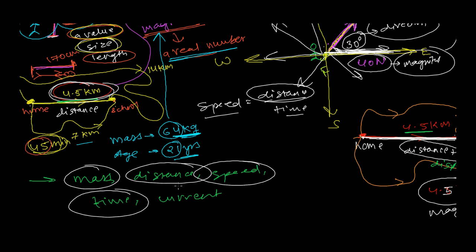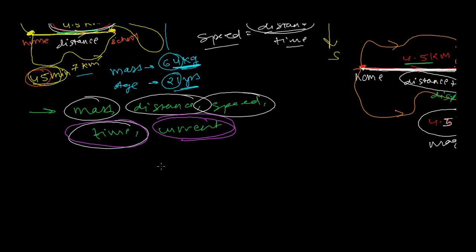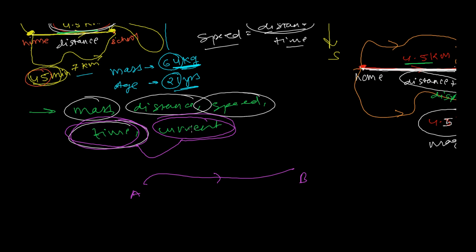You might be confused and say, 'Hey, time has a direction because it moves from past to future,' and similarly, 'Current moves in a particular direction, from higher to lower potential.' But time and current never follow vector algebra rules. To be a vector quantity, everything must follow certain vector algebra rules — like commutative law and distributive law. If any quantity does not satisfy vector algebra rules, it is not a vector quantity. That's why time and current are scalar quantities.